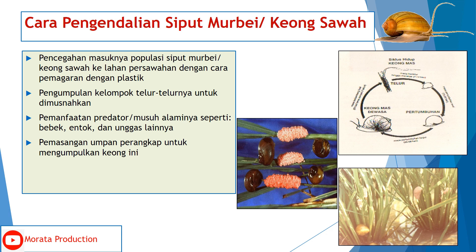Cara pengendalian siput murbei atau keong sawah: pertama, melakukan pencegahan masuknya populasi siput murbei ke lahan persawahan dengan cara pemagaran plastik; kedua, pengumpulan kelompok telur untuk dimusnahkan; ketiga, pemanfaatan predator atau musuh alaminya seperti bebek, entok, dan unggas lainnya; dan keempat, melakukan pemasangan umpan perangkap untuk mengumpulkan keong. Contoh gambar keong beserta telurnya dan siklus hidupnya dapat dilihat di sebelah kanan.